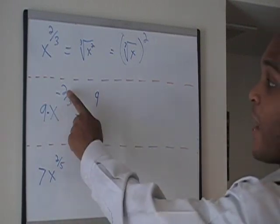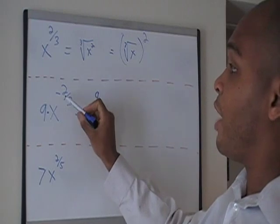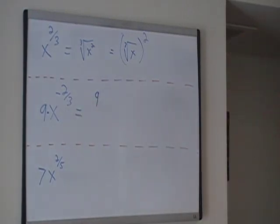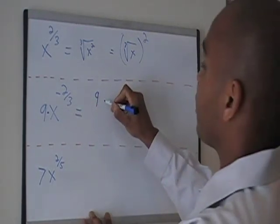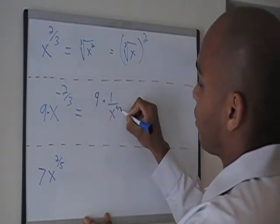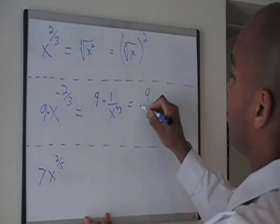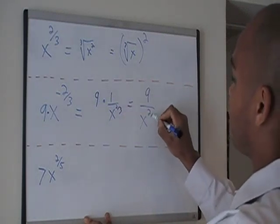Now, the x to the negative 2/3, well, what's our base? Our base is x. To get rid of the negative exponent, we take the reciprocal of our base. So instead of x, it's going to be 1 over x. And now we make the exponent positive. So to finish, we have 9 times 1 is 9, all over x to the 2/3.